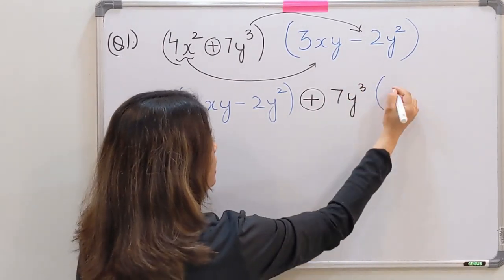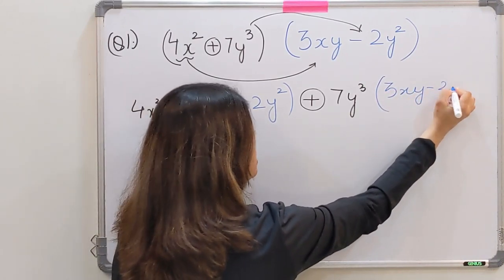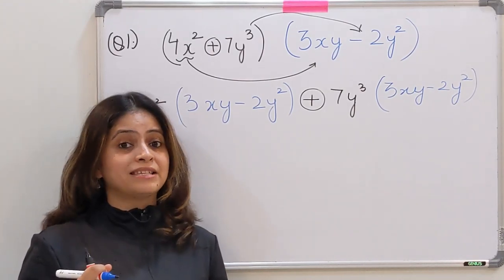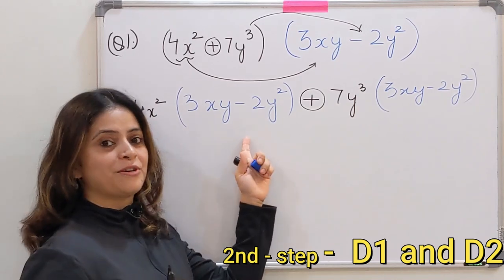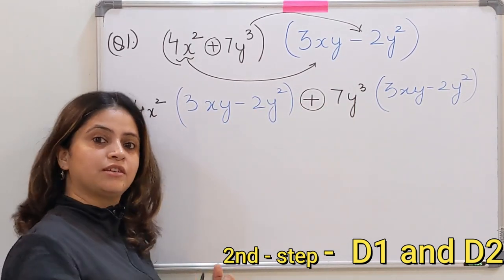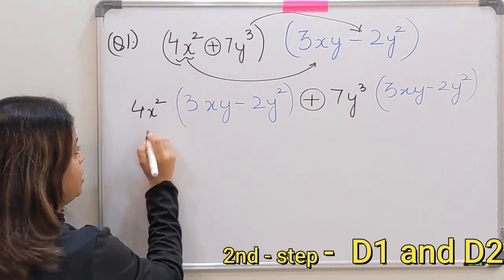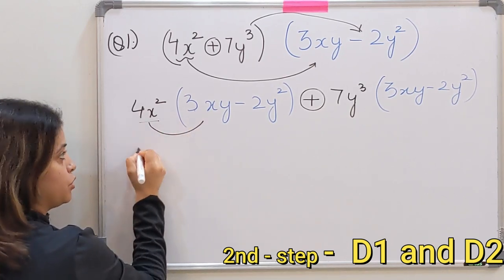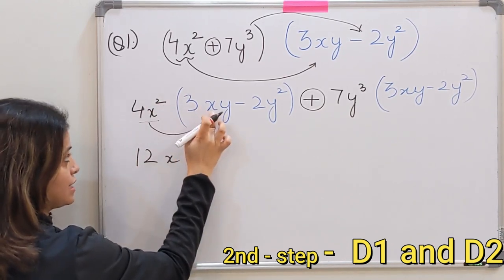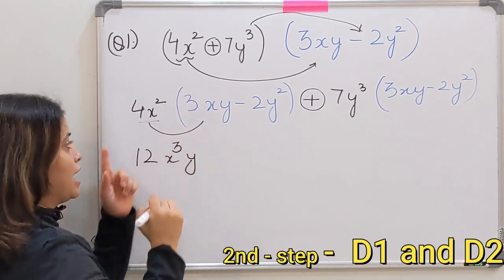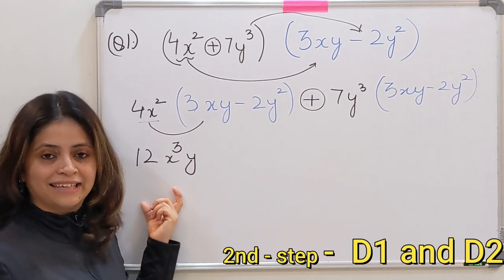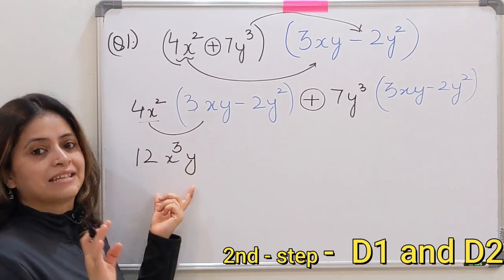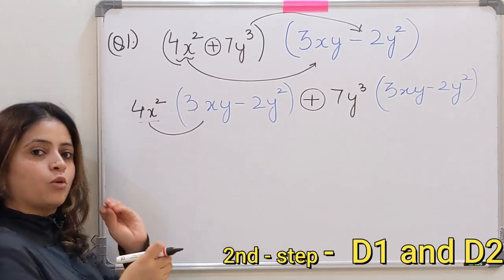So we have 7y³ and next we have again 3xy minus 2y². So hide and seek method is clear. Next step is D1 D2. We will be applying distributive property twice. So let's start with the distributive property. Here we have 4x² multiply by 3xy. So just multiply 4 and 3 which is 12, x² x is x³ y. If you can directly multiply, nothing like that. But if you're not comfortable, just write down the complete step.